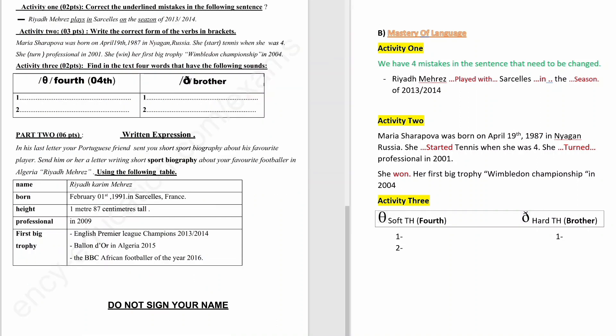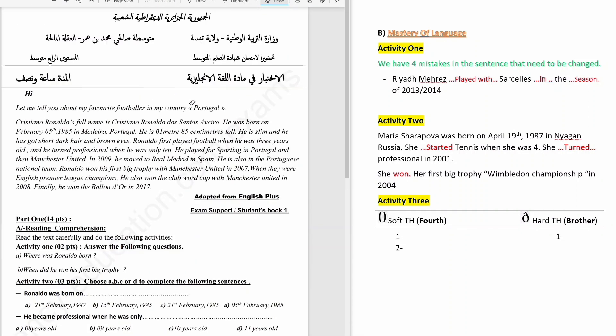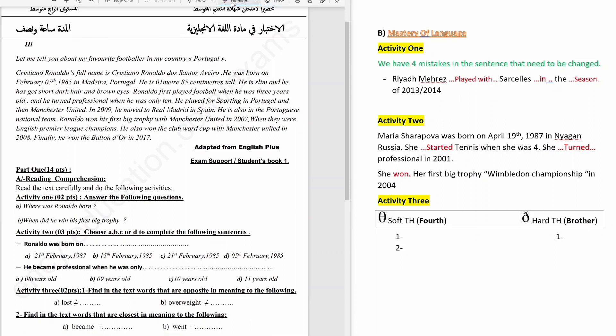Activity 3. Find in the text four words that have the following sounds — soft th and hard th. For soft th, we have the word three. For hard th, we found they and with.